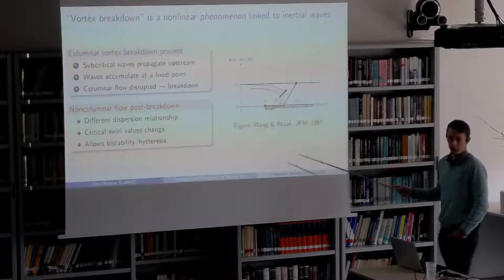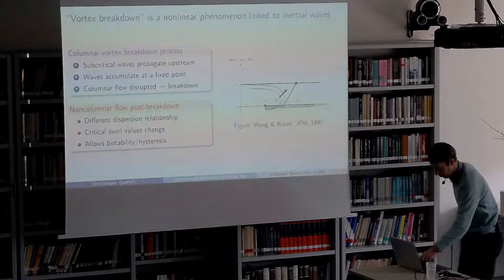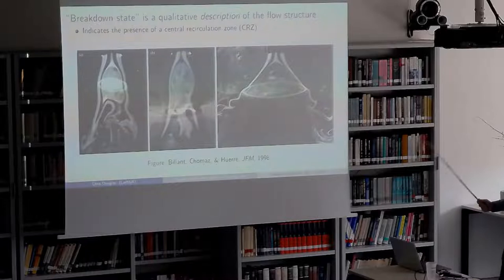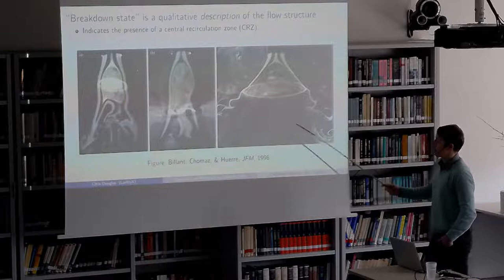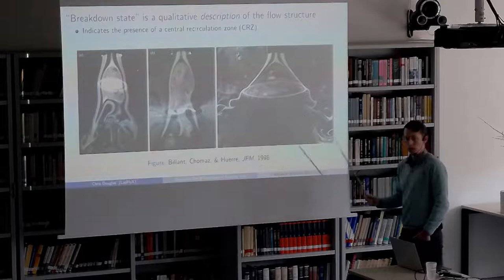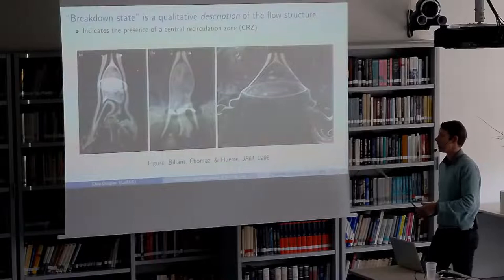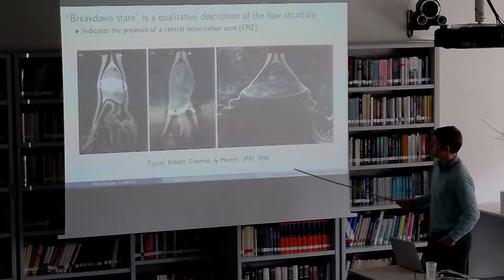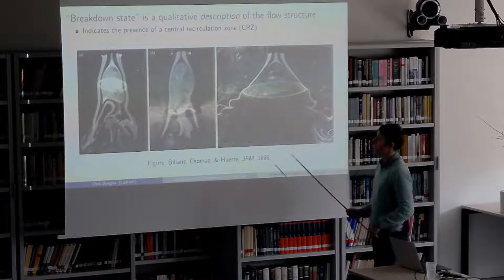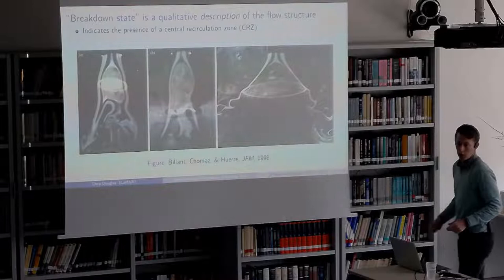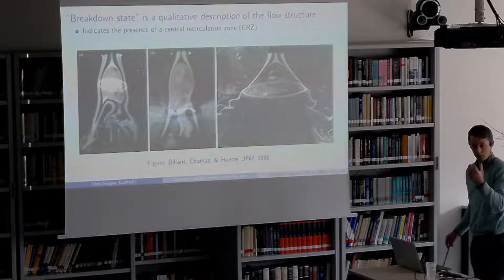This hysteresis is really important to understand if you're designing something like a combustion system that you want to operate reliably. There's a distinction between breakdown state and breakdown flow structure: a breakdown state describes the flow topology but doesn't necessarily mean the flow is taking that appearance because of the vortex breakdown phenomenon. These visualizations show different structures of vortex breakdown states — they all have a central recirculation zone, but the flow structure can be quite different, due not to the axisymmetric dynamics of vortex breakdown but to other instabilities that come into play.